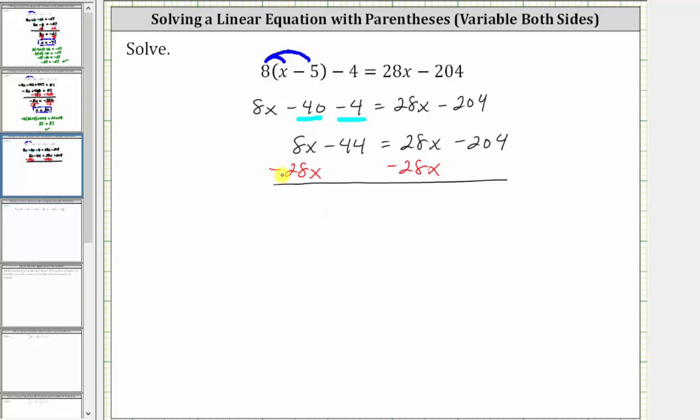Simplifying on the left, 8x minus 28x is negative 20x. We still have minus 44 equals on the right side. 28x minus 28x is zero. The right side simplifies to negative 204.